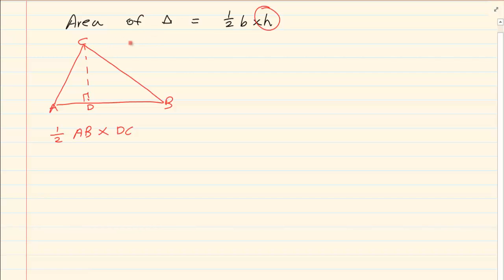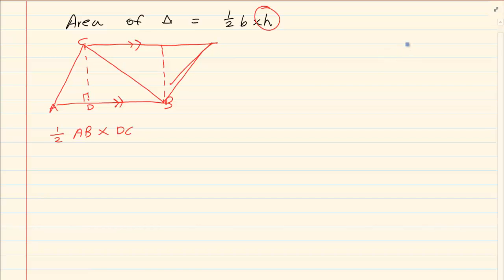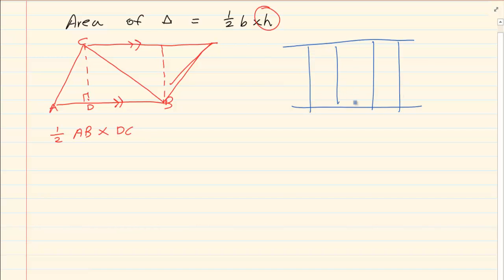If I gave you another triangle, and let's say these lines are parallel — you know between two parallel lines the length is always the same. The perpendicular height, or the distance between the two parallel lines, is always exactly the same.